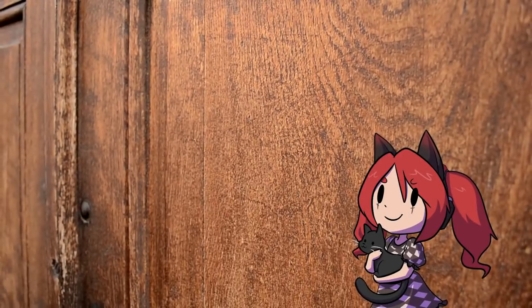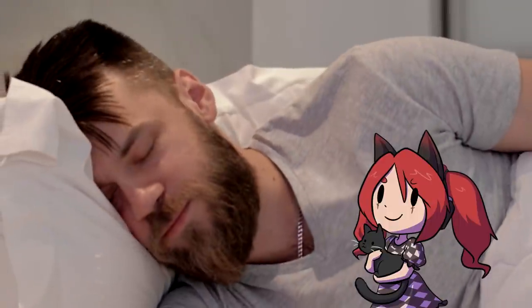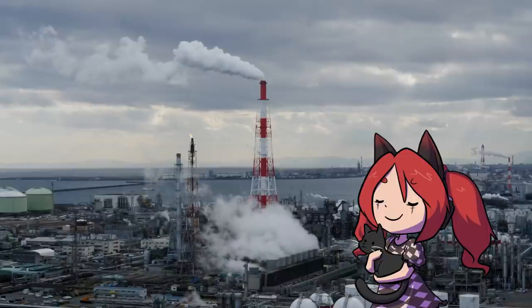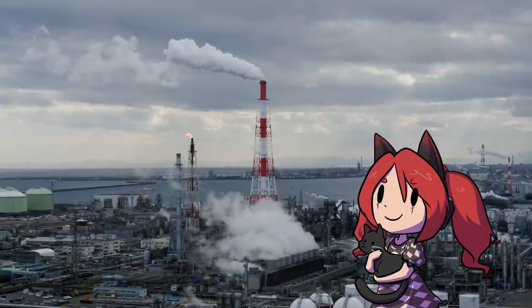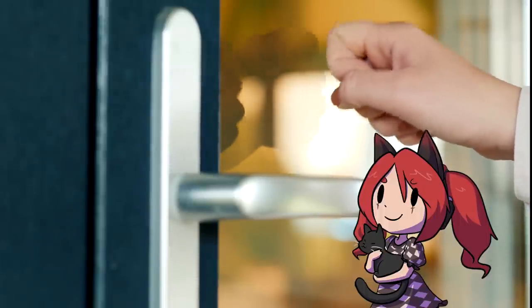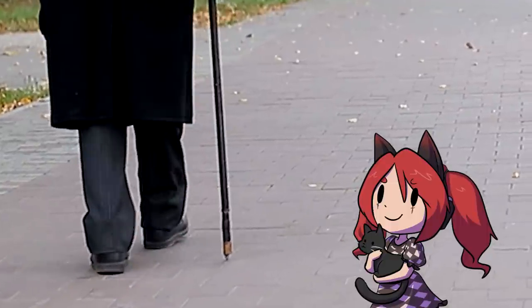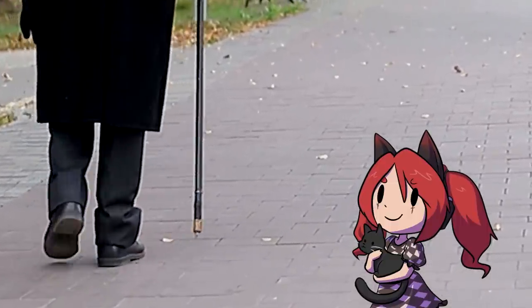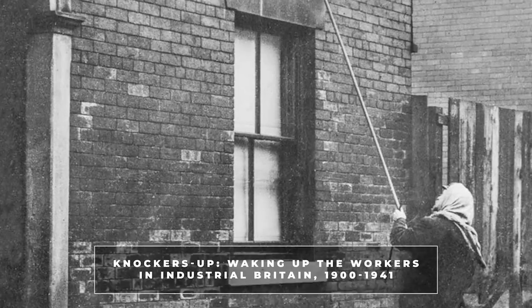A knocker up, or knocker upper, was a manual alarm clock. Though this begs the question, who woke up the alarm clocks? But seriously, in industrial Britain, even up until the 1970s in some places, many workers were woken up by tapping at their windows. A knocker upper would go around with a long walking stick with a wire or knob on the end, tap a window a few times, then move on to the next house.